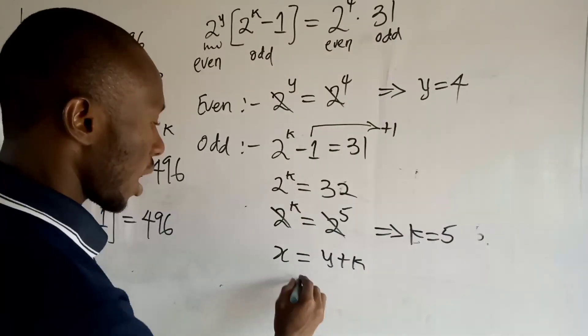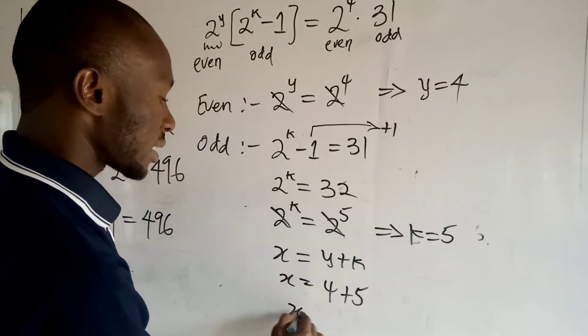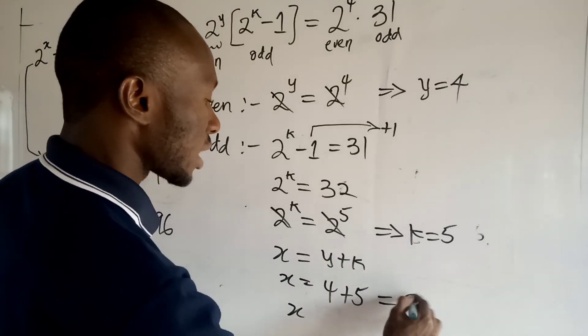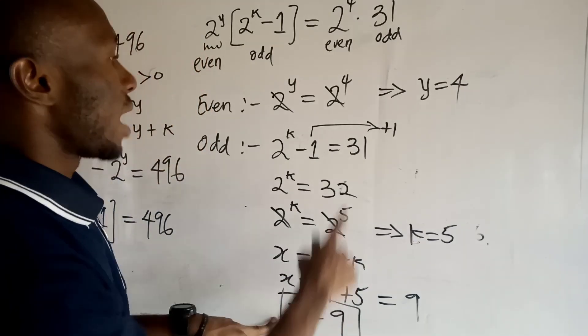But y is now 4, so I have it to be 4 plus k, which is 5. I have it to be 5. Therefore x is equal to 9.